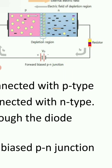The holes from P-type are repelled towards the depletion region, and the electrons from N-type are pushed towards the depletion region because of the negative terminal of a battery. When these electrons and holes are repelled by the forward biased battery of the P-N junction diode, they will get pushed towards the depletion region, due to which the width of the depletion region will get reduced. The depletion region will reduce.